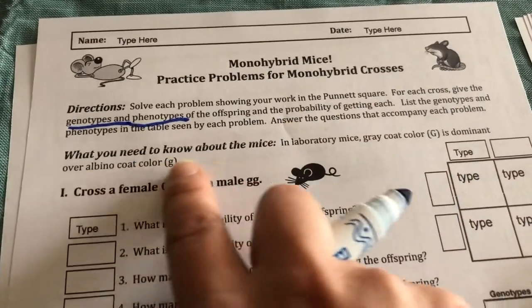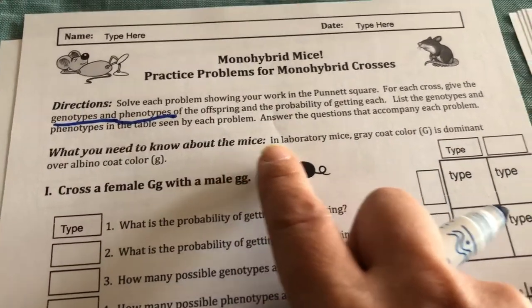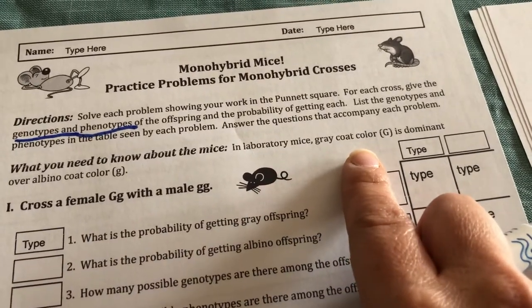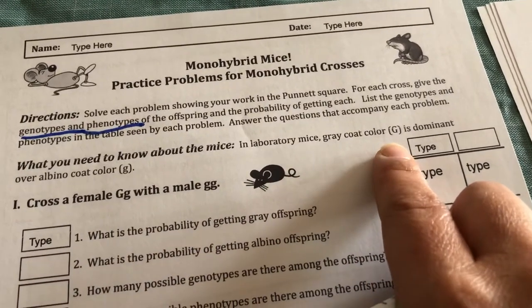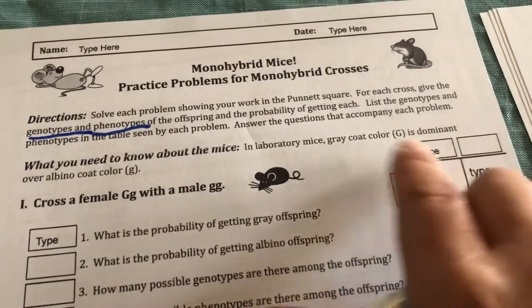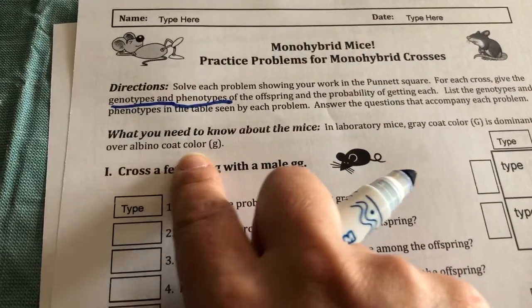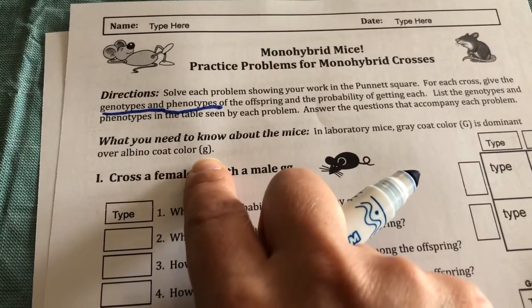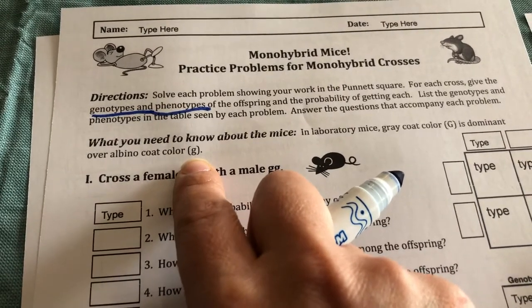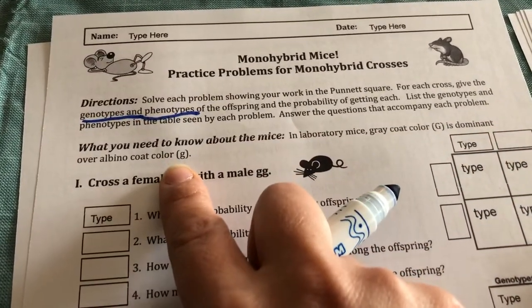Here's what you need to know about your little mice today. In laboratory mice, gray coat or gray fur is capital G. It's dominant over albino or white coat. The allele is lowercase g. Capital G and lowercase g are both called alleles.